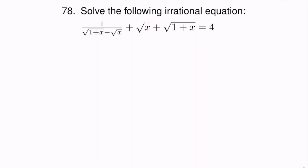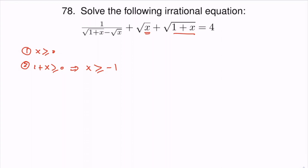So as always with irrational equations, the first thing we should do is to find the domain of valid values for the unknown, which is x here. So we know that x has to be greater than or equal to zero for this square root to be defined. We also know that one plus x has to be greater or equal to zero, so one plus x ≥ 0, and therefore x ≥ -1. From these two conditions, x has to be greater than or equal to zero.